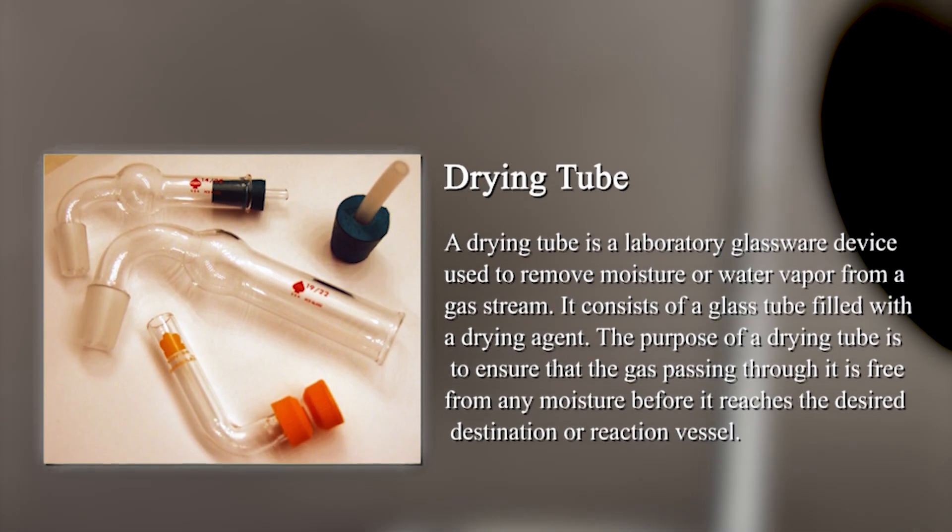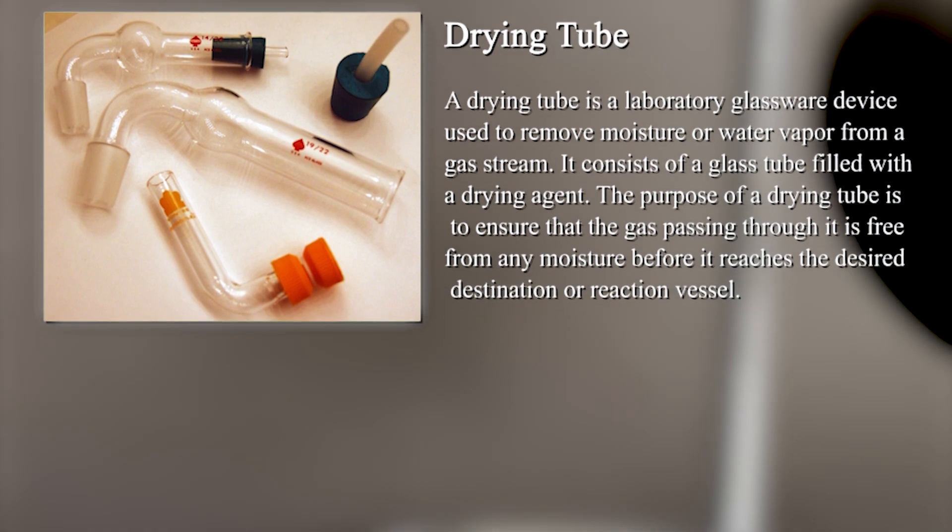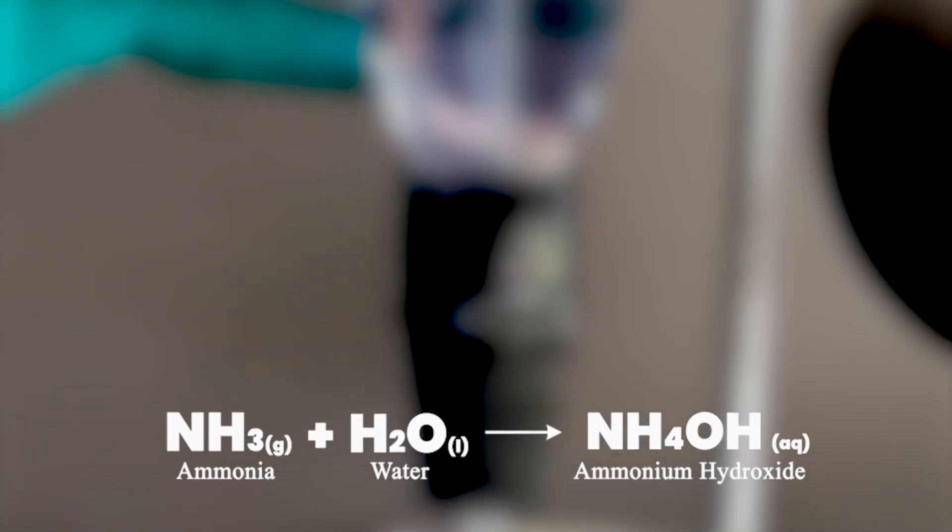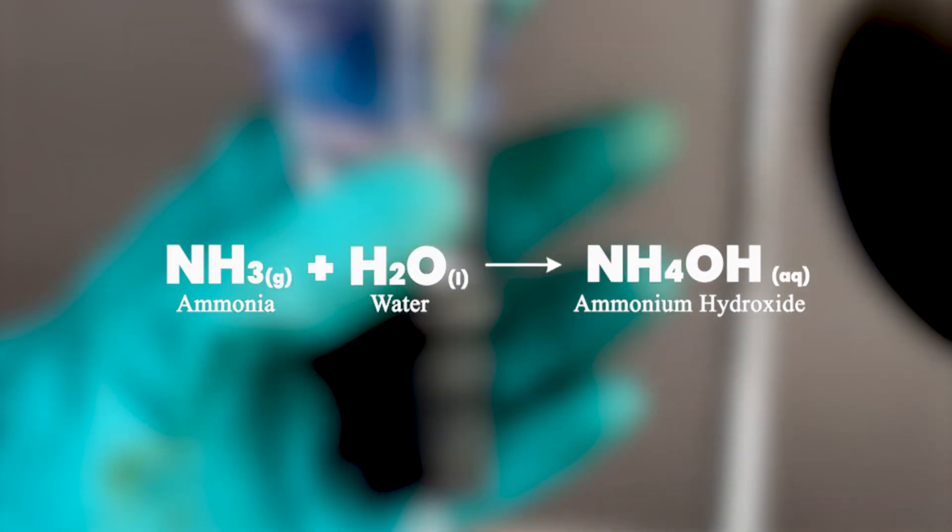After doing a bit more research, I decided to add a drying tube into the setup. I concluded another reason why the fountain was unable to flourish was due to the presence of water moisture in the Erlenmeyer flask, which reacted to the ammonia present to revert back to ammonium hydroxide.